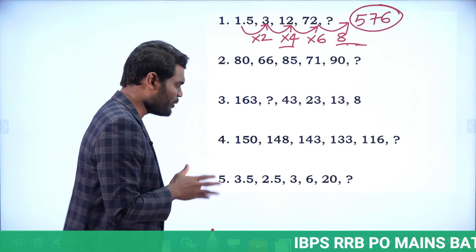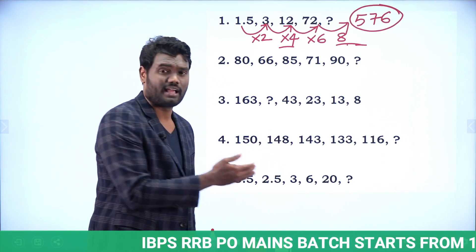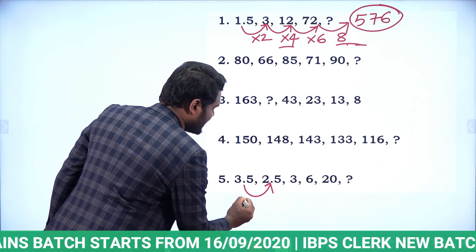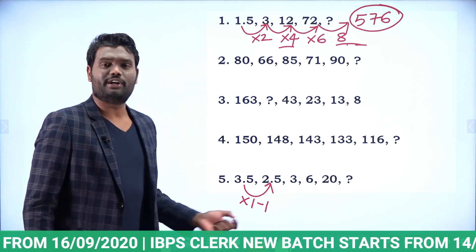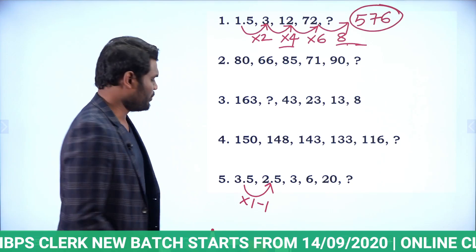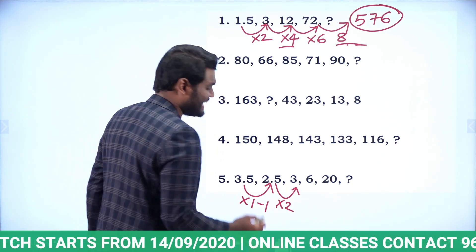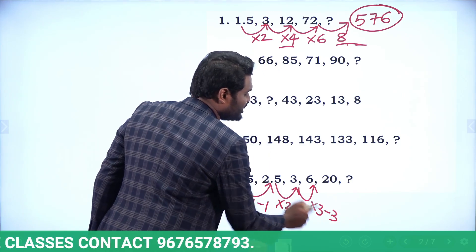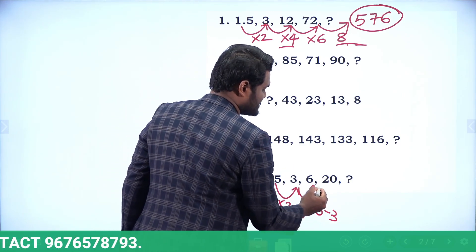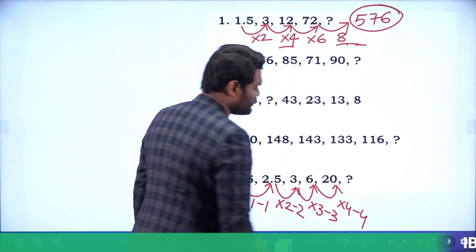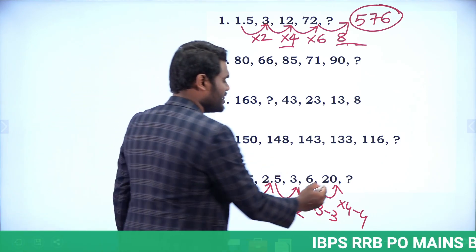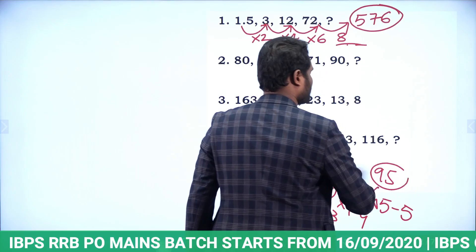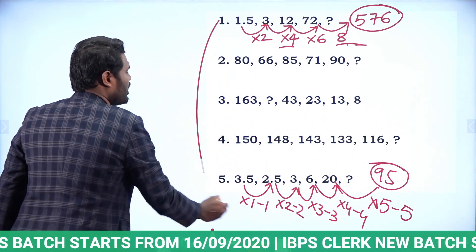Next question: 3.5, 2.5, 3, 6, 20, question mark. The pattern is: 3.5 × 1 − 1 = 2.5, then 2.5 × 2 − 2 = 3, then 3 × 3 − 3 = 6, then 6 × 4 − 4 = 20. Following the pattern: 20 × 5 − 5 = 95. The answer is 95. All five number series questions can be solved in just 2 minutes.